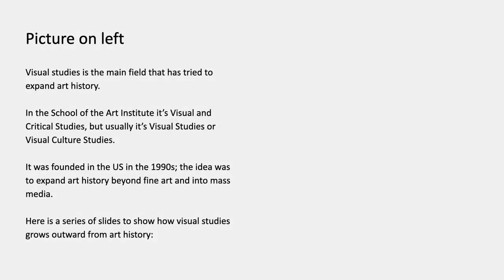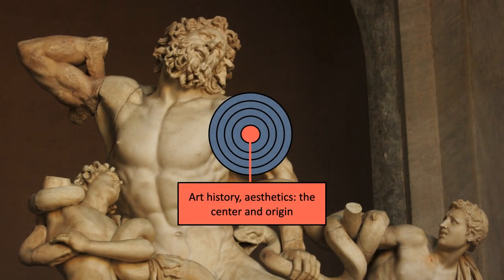Visual studies is the main field whose scholars have tried to expand art history. At the School of the Art Institute it's called visual and critical studies, but usually it's called visual studies or visual culture studies. It was founded in the US in the 1990s, and the idea was to get away from fine art and to start studying mass media, especially television and advertising. I have a series of slides to show how visual studies grows outward from art history in circles.